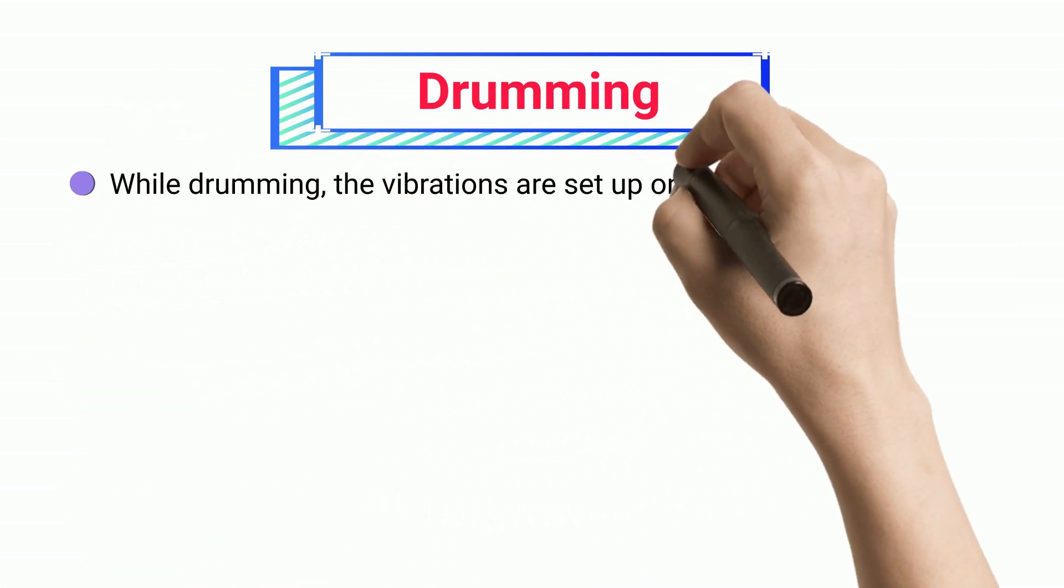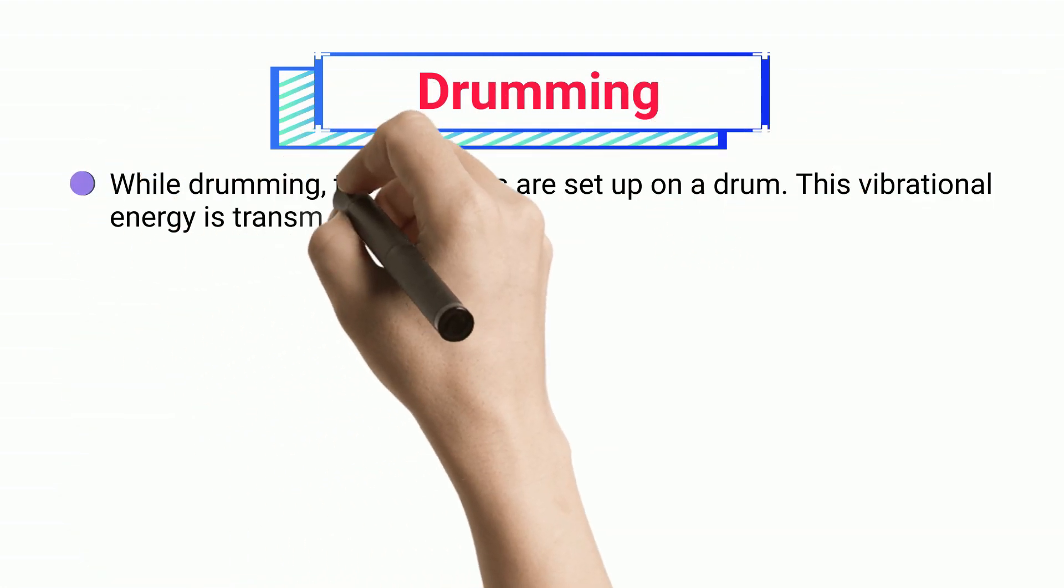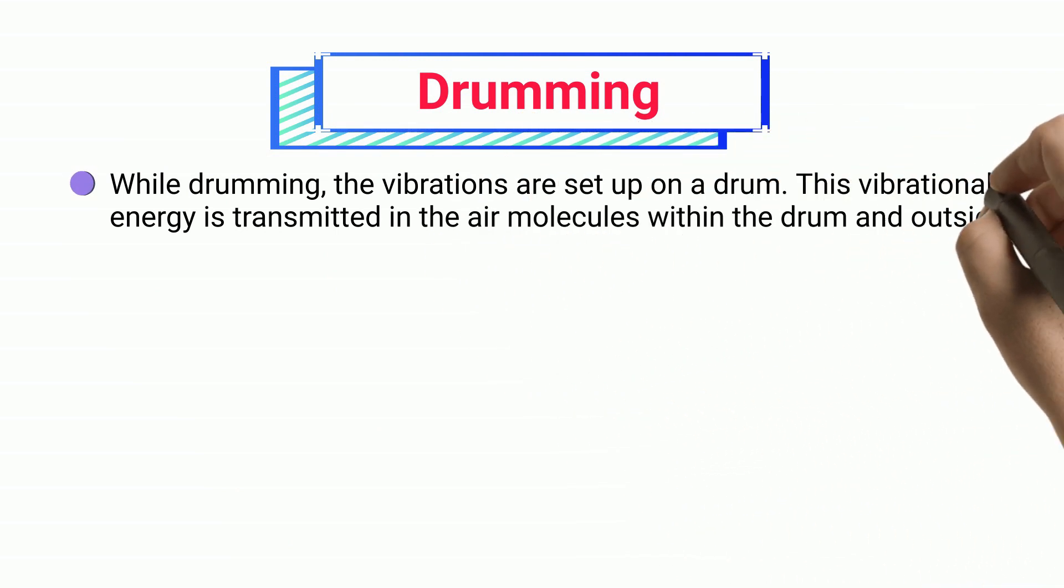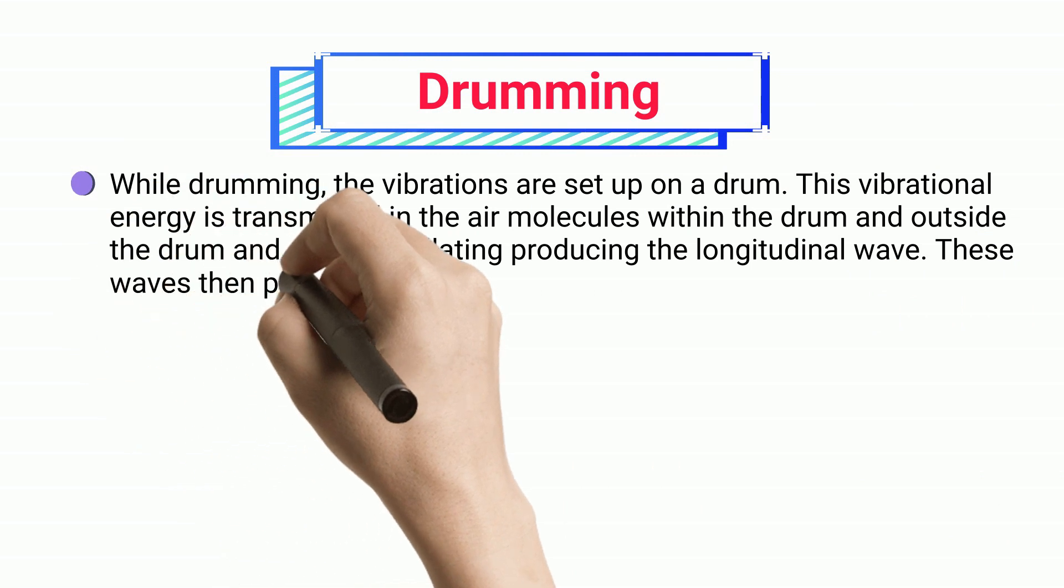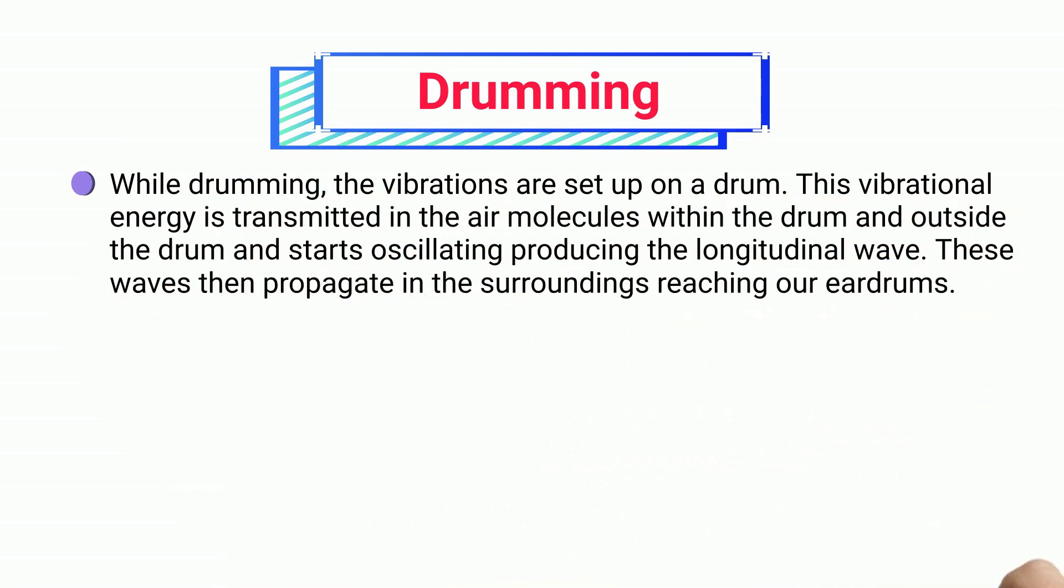Drumming. While drumming, the vibrations are set up on a drum. This vibrational energy is transmitted in the air molecules within the drum and outside the drum and starts oscillating, producing the longitudinal wave. These waves then propagate in the surroundings reaching our eardrums.